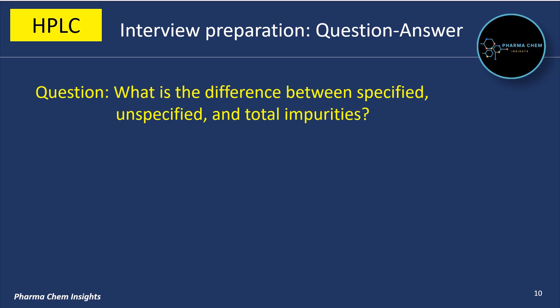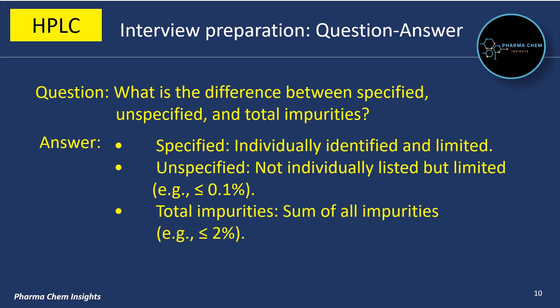Next question: what is the difference between specified, unspecified, and total impurities? Specified impurities are individually identified and limited. Unspecified impurities are not individually listed but are limited, for example less than or equal to 0.1%. Total impurities is the sum of all impurities (known plus unknown), for example less than or equal to 2%.